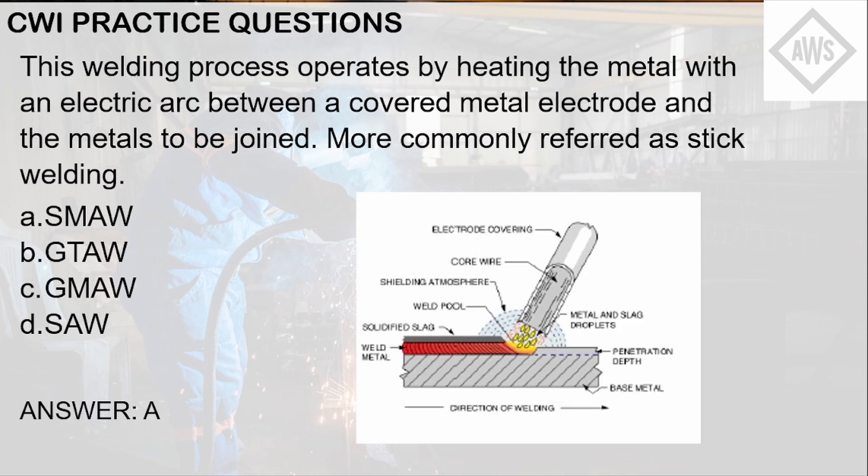As you can see here, the flux coating on the electrode produces a shielding gas that protects the weld pool from harmful atmospheric gases that would embrittle the weld. That's the basic principle of SMAW.